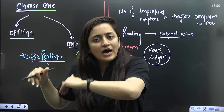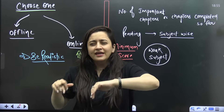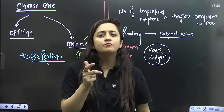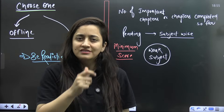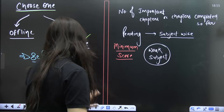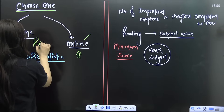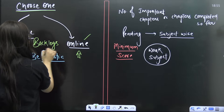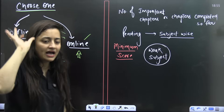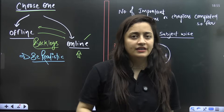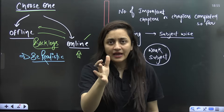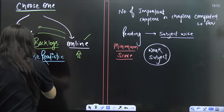Those who go offline think they'll skip classes and watch online lectures. Those who attend online think they're not in the mood today, they'll watch it tomorrow. Because of that one thing — backlogs. If you keep juggling, you will have backlogs. And I'm sure if you're watching this video, you have backlogs.